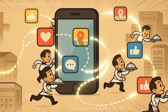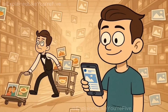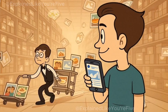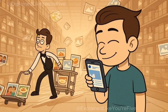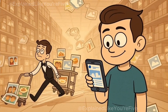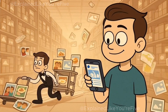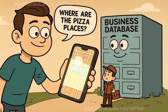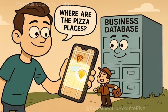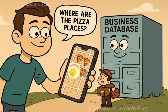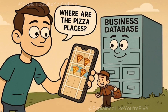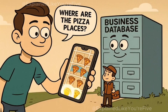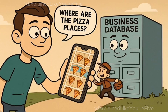Every app on your phone uses APIs constantly. When you open Instagram and see all your friends' photos, Instagram's API waiter is running around collecting all those photos from Instagram's big photo storage room and bringing them back to show you. When you use Google Maps to find the nearest pizza place, Maps sends its API waiter to ask Google's giant database of businesses where all the pizza places near you are. The API waiter comes back with a list, and boom, you see little pizza icons all over your map.